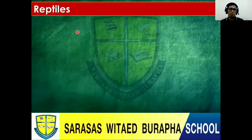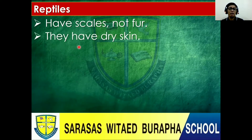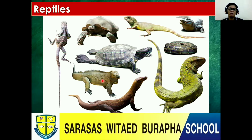Reptiles. What are the characteristics of reptiles? They have scales, not fur. They have dry skin. They usually lay eggs, sometimes live young. And they are cold-blooded. Let's see some examples: a turtle or tortoise, alligator, snake, gecko or salamander, and a lizard. Those are examples of reptiles. Let's go to the next one.